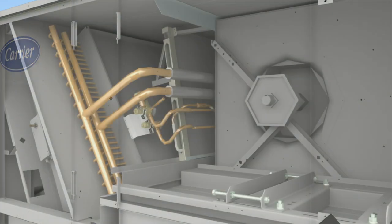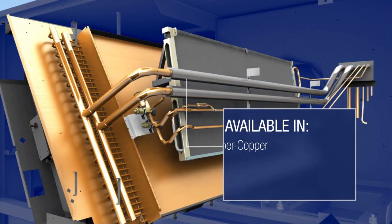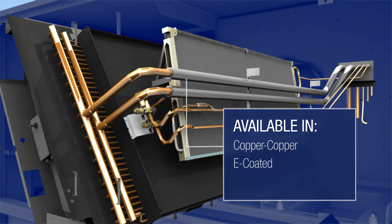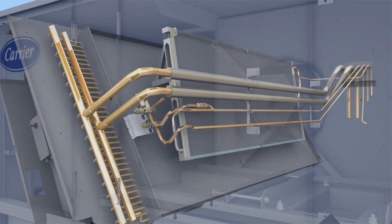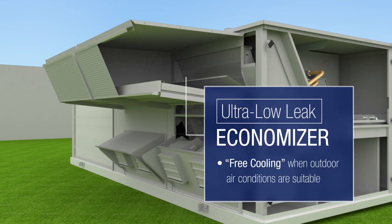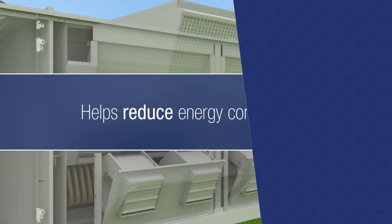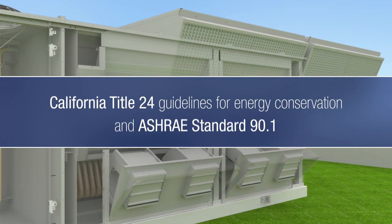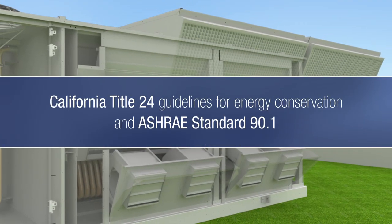For added protection in corrosive environments, Carrier offers a wide range of coil and condensate drain pan upgrades. An optional ultra-low leak economizer system provides free cooling when outdoor air conditions are suitable. This helps reduce energy consumption while meeting California Title 24 requirements and ASHRAE Standard 90.1.